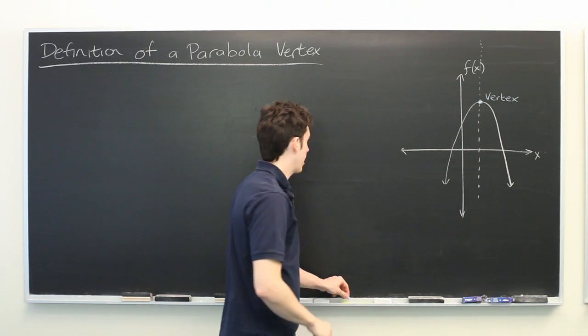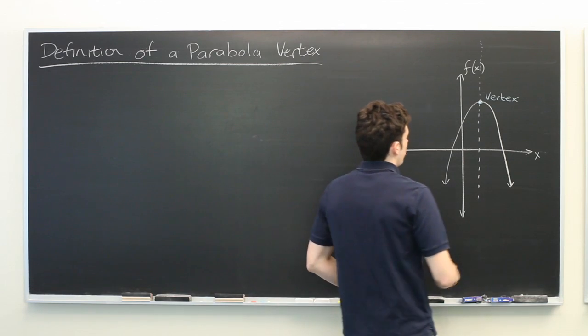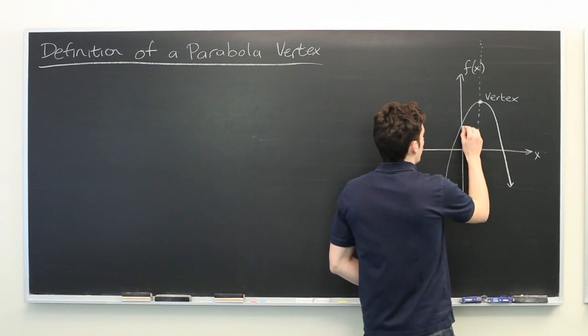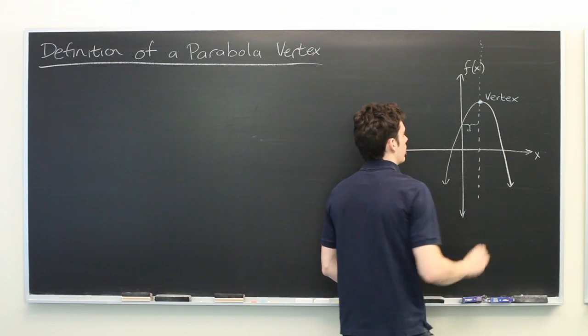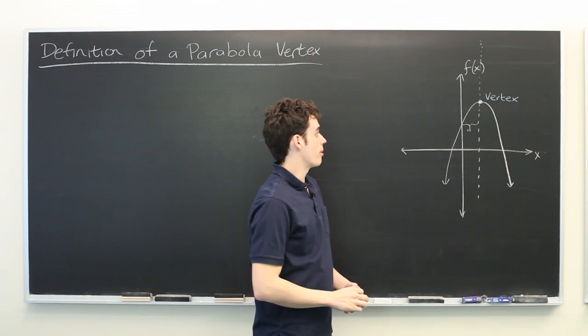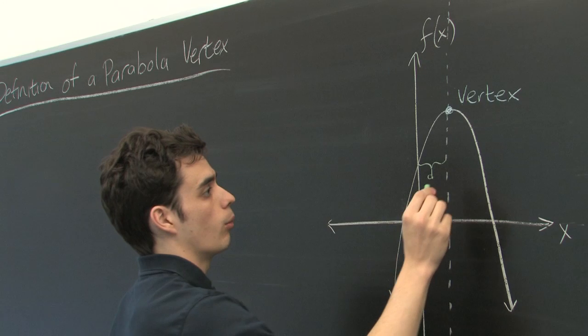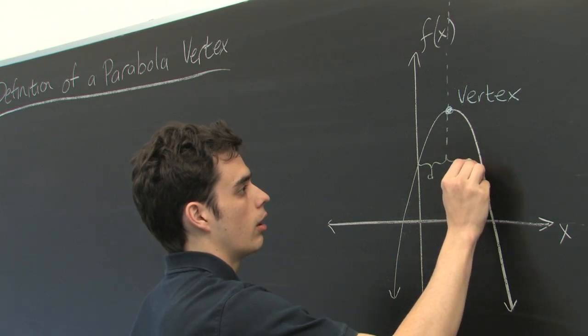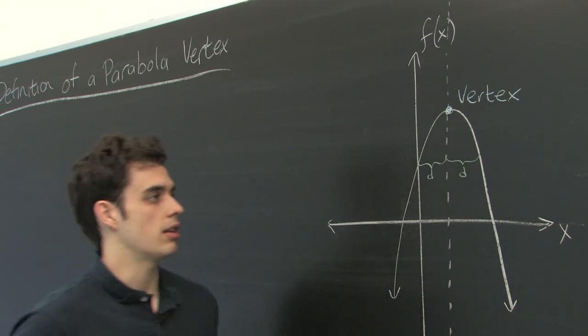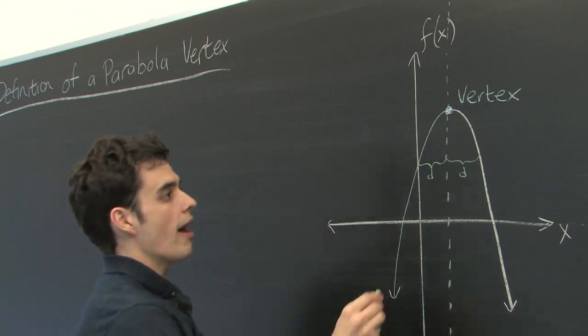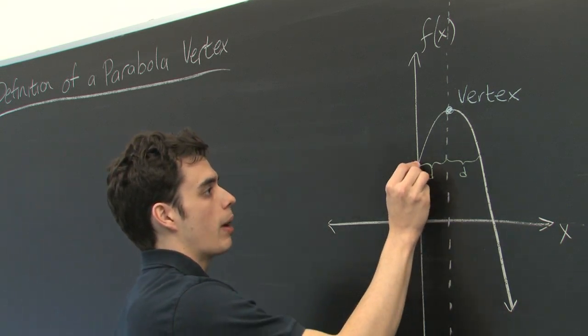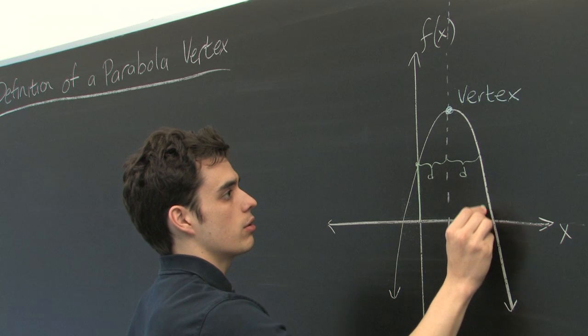The meaning of this axis of symmetry is that if you take an x value, which is a distance d away from the vertex in one direction, and a distance d away from the vertex in the other direction, the y values that correspond to those x values will be the same.